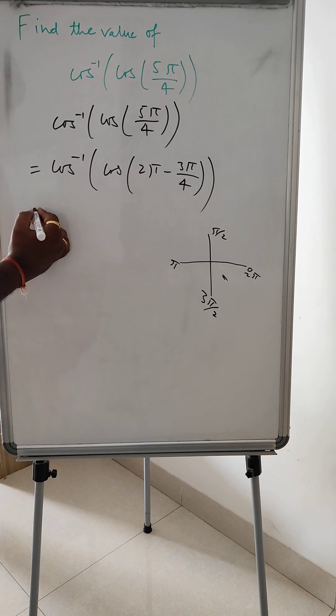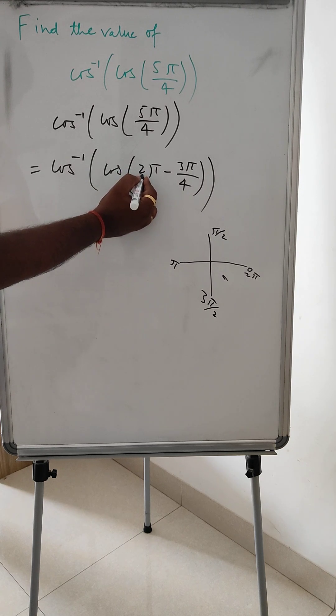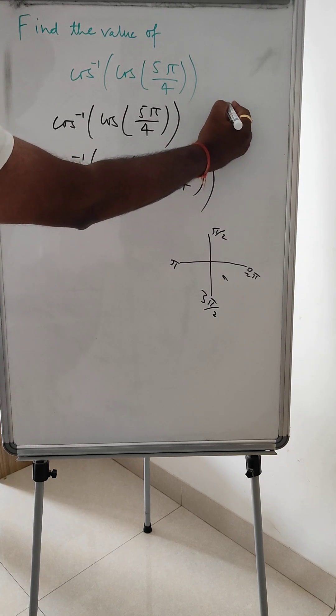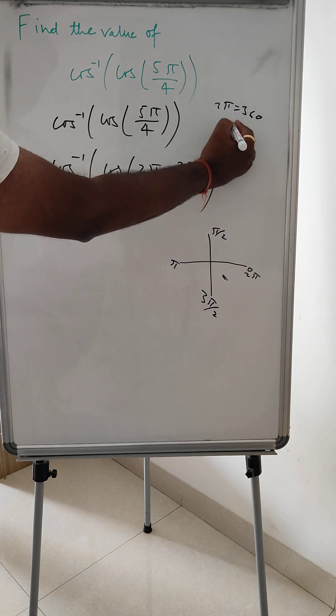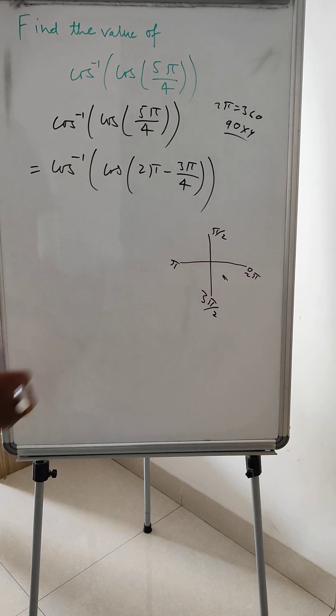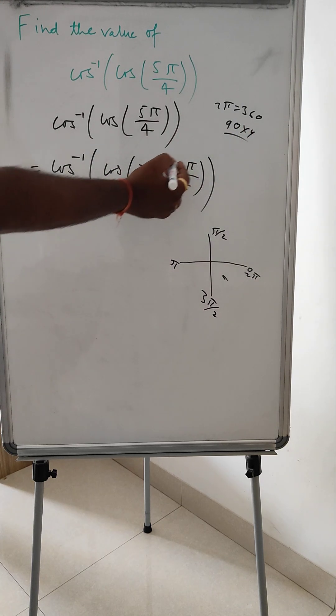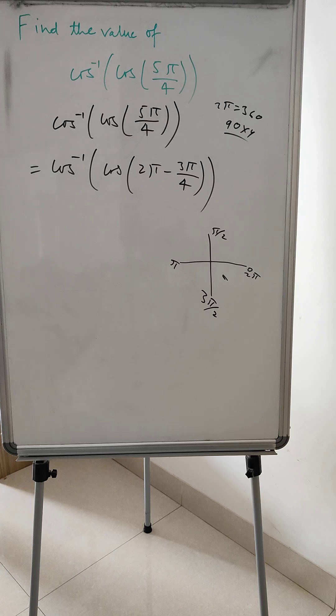So now, this 2π is 360. And 360 is even multiple of 90. So when it's an even multiple of 90, then there is no change. Cos will remain the same.